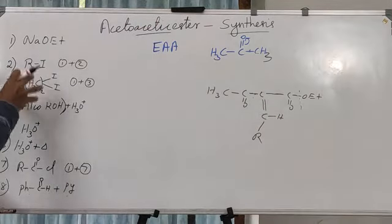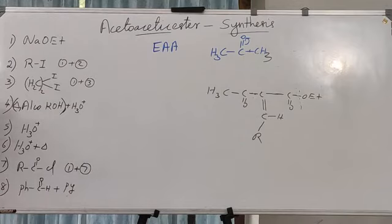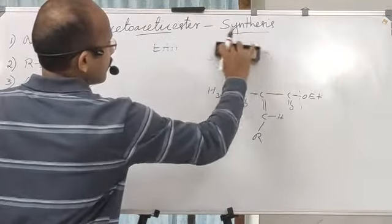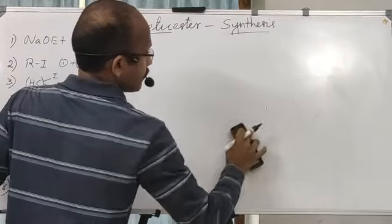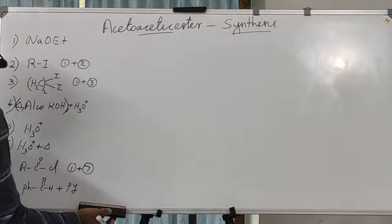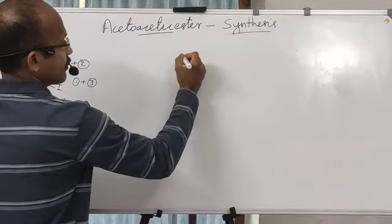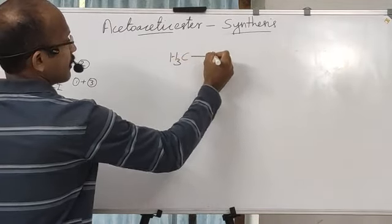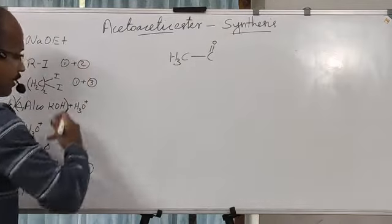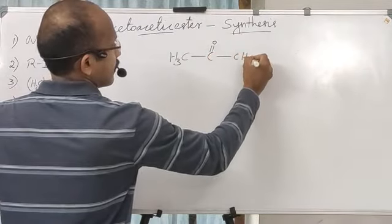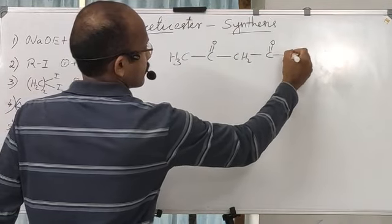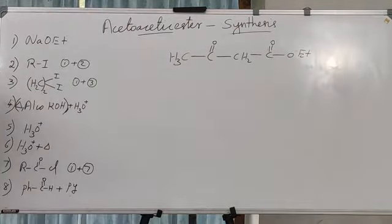Combinations of these individual steps are key to the synthetic utility of ethyl acetoacetate. By selecting different sequences of steps, we can target specific functional group patterns. For example, we can consider the combination of steps 1, 7, and 6.